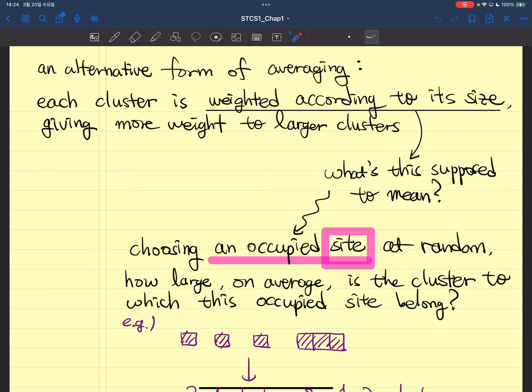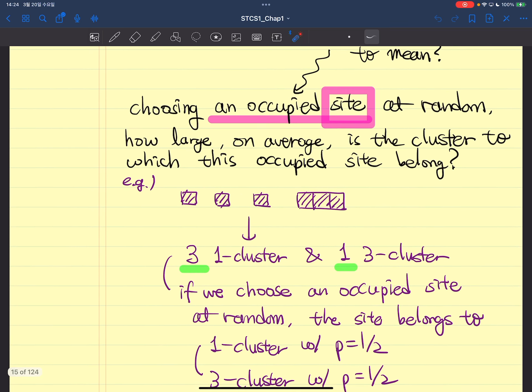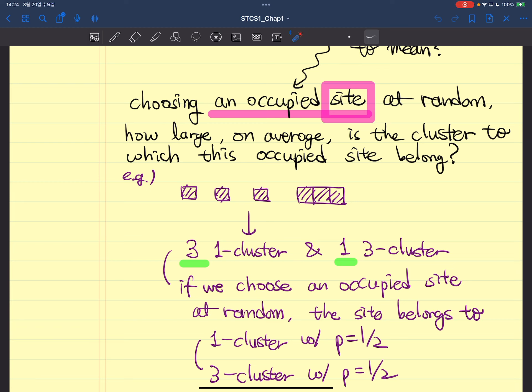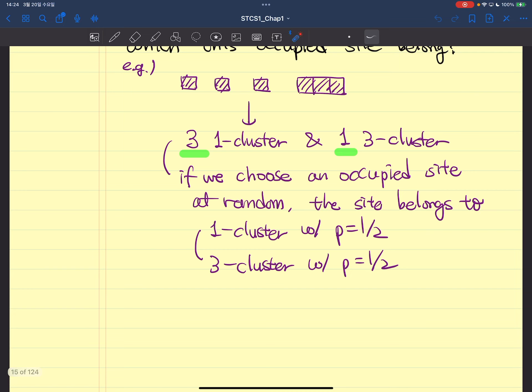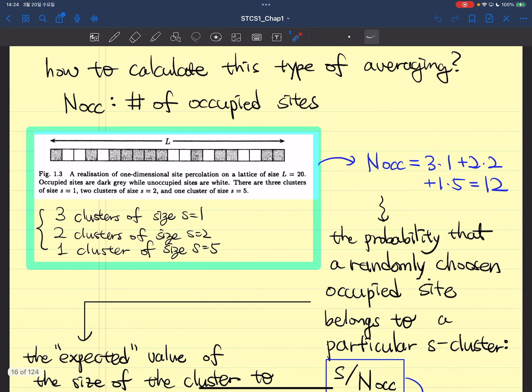But this particular way or alternative form of averaging is: each cluster is weighted according to its size. Accordingly, it gives more weight to larger clusters. What's the meaning of this? If we choose an occupied site at random, how large on average is the cluster to which this occupied site belongs? This is the description I introduced already last week.